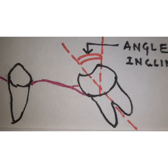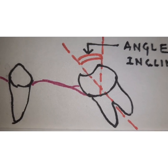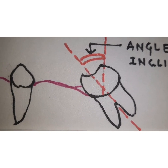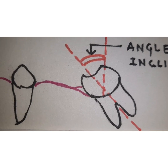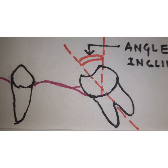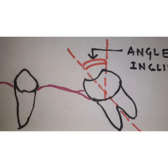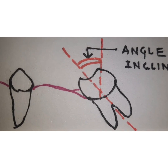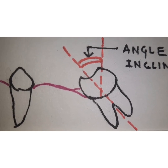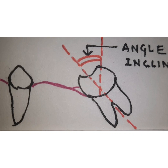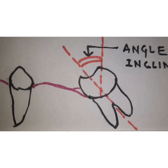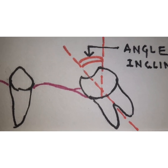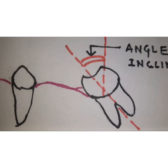This becomes a very tricky clinical situation in which we have to achieve a single path of insertion, and we need to correct the distal or mesial tilt of the molar tooth. If the molar is tilted more than 30 degrees, that is the angle of inclination is more than 30 degrees, then it is not suitable to be used as an abutment tooth for a fixed partial denture. But if it is less than 25 to 30 degrees angulation, then you can use this with some modifications.